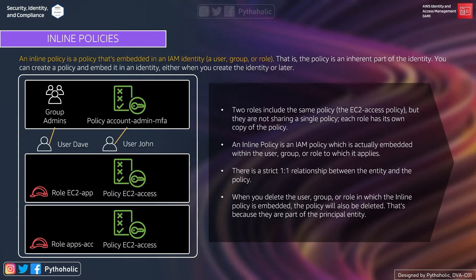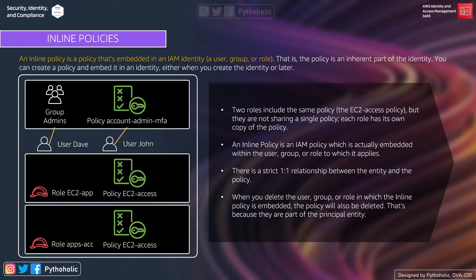That's what it means to be an inline policy — it has a one-to-one relationship with its entity. In the image, the policy account-admin-mfa is attached to a single group called group-admins with users Dave and John. Role ec2-app has an inline policy called ec2-access, and role app-account also has a policy called ec2-access. Even though the names are the same, they are not sharing a single policy — each role has its own copy of the policy. Even if the content is the same, they are individual copies.